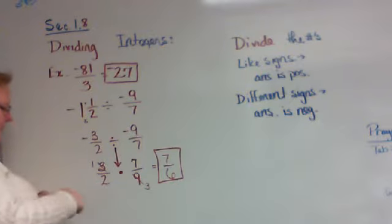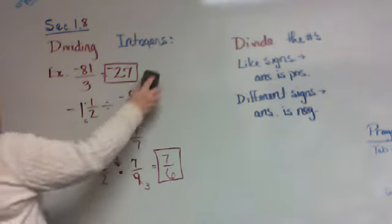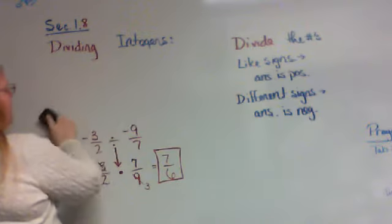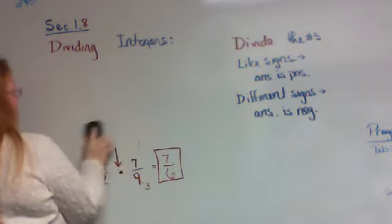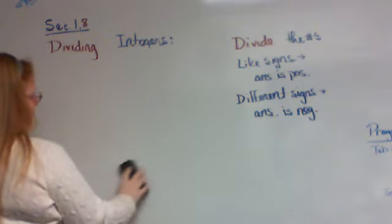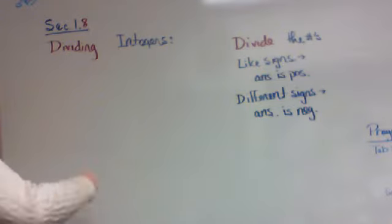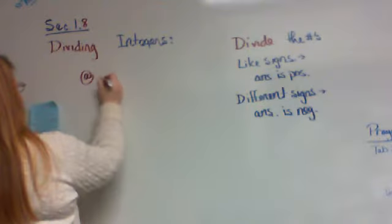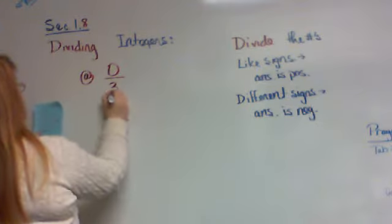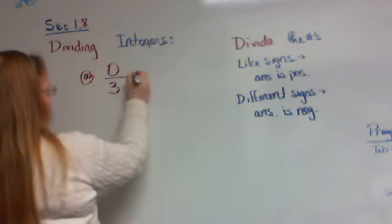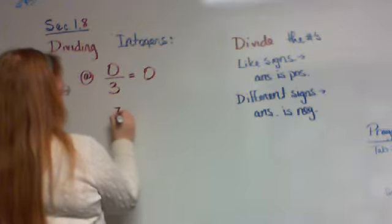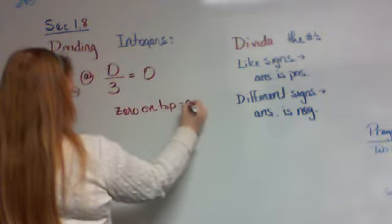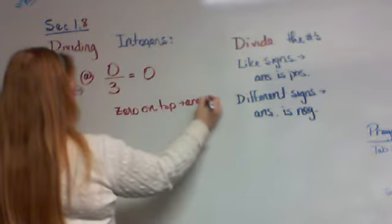Our next example we need to talk about. I don't know if you've had to memorize this in the past or not, so I need you to memorize it now if you haven't already. It's really important. When you have zero divided by a number, your answer is zero. Zero on top means your answer equals zero.